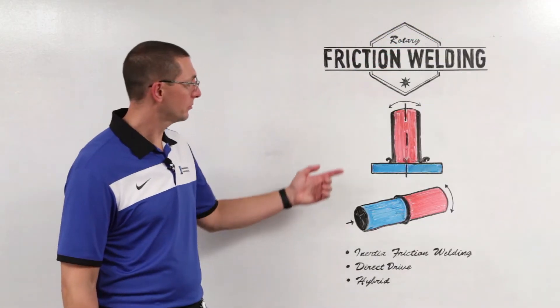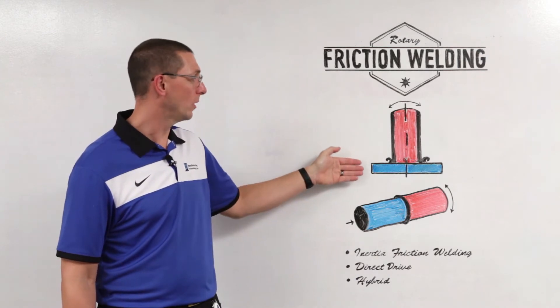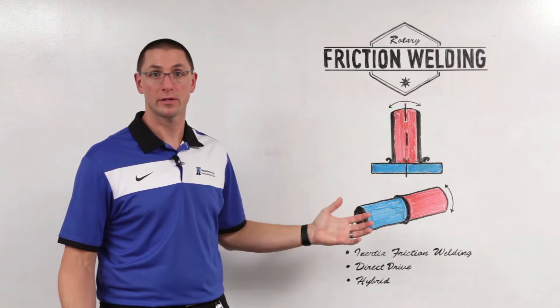Rotary friction welding is used when you have one component that can be rotated or symmetric about its rotary axis, welded to another part that does not necessarily need to be symmetric.